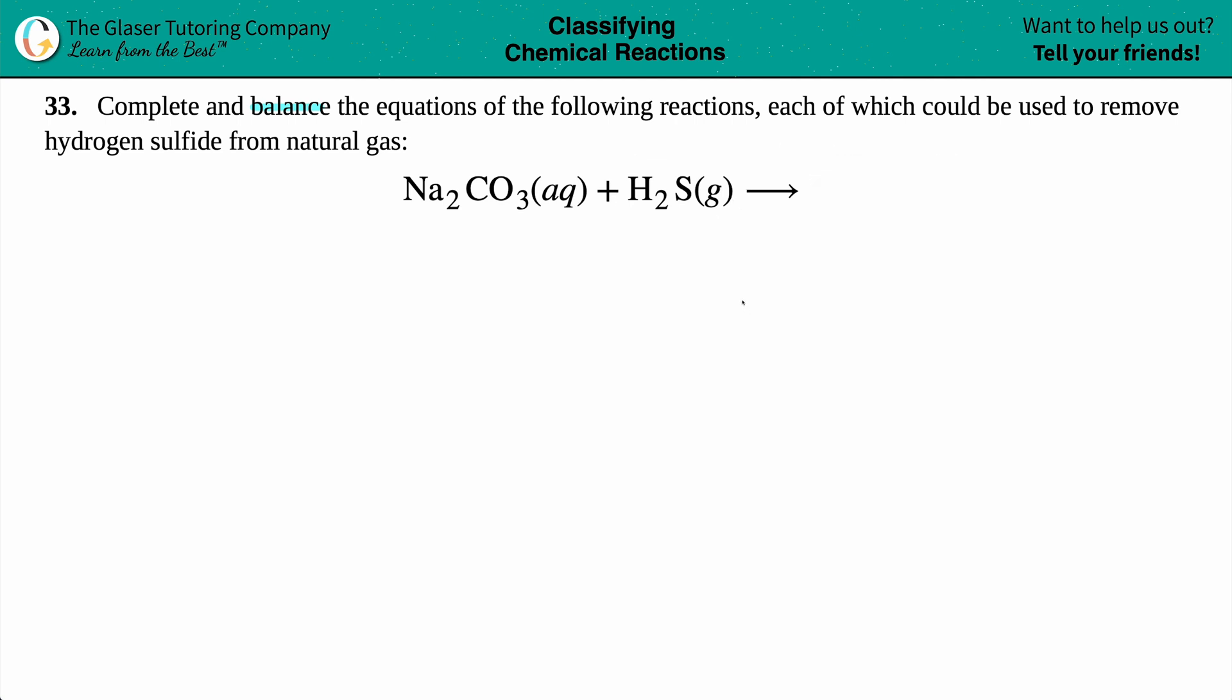Well the first thing I see here is that we're dealing with two different compounds. I have multiple elements for my Na₂CO₃: sodium, carbon, and oxygen, and the same thing for the H₂S: hydrogen and sulfur. Whenever you see that you have two compounds, you know that this reaction is going to be a double replacement or double displacement reaction.